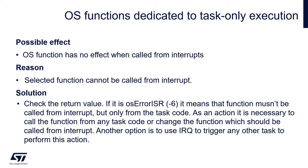The next possible problem we may face is when we call an operating system function from an interrupt routine. In case we observe no effect of the function execution, we should check its return value. If it is osErrorISR (which is minus 6), it means the function must not be called from an interrupt, but only from task code. The action is to call the function from task code, or change to a function that is safe to call from an interrupt, or use the interrupt to trigger a task to perform the action instead.